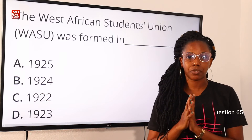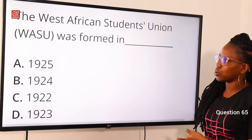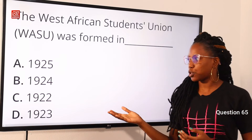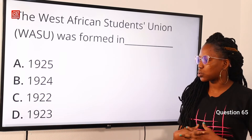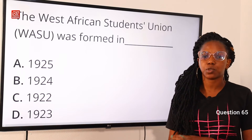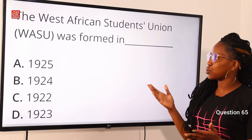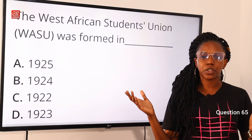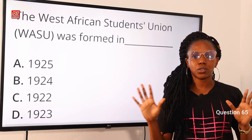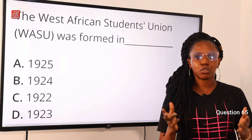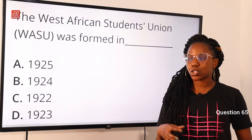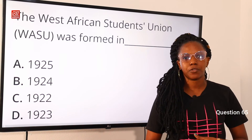Question 65: the West African Students Union was formed in — option A, 1925; option B, 1924; option C, 1922; option D, 1923. The answer is option A, 1925. The West African Students Union, WASU, was formed on the 7th of August 1925 by 21 law students led by Ladipo Solanke and Abiodun Bankole Bright. The answer is option A, 1925.